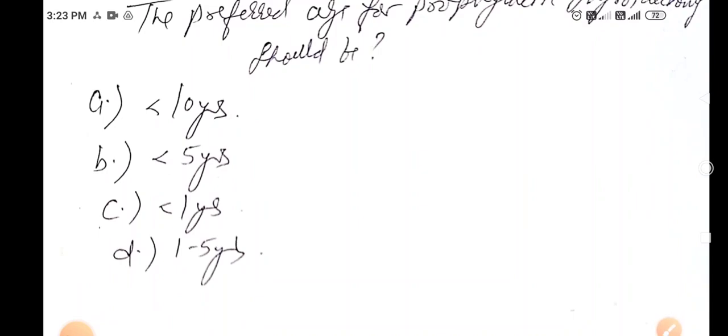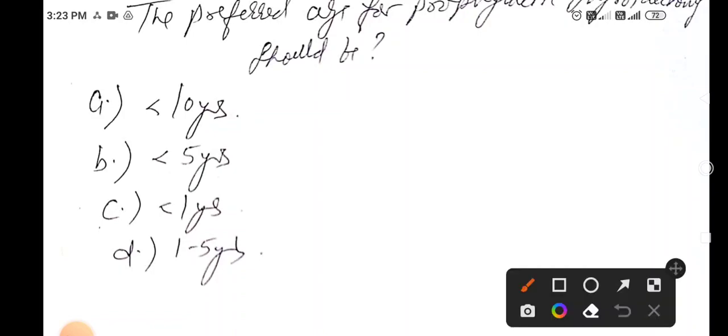I'm going to explain about MEN 1, MEN 2A, and 2B. MEN 1 - in exams they like to ask what is the other name. Other name is Wermer syndrome. Here is triple P: pituitary adenoma, parathyroid hyperplasia, pancreatic tumors.